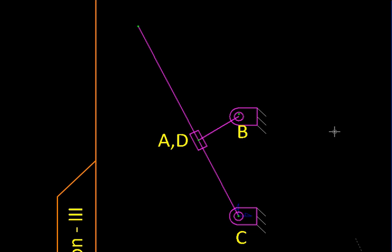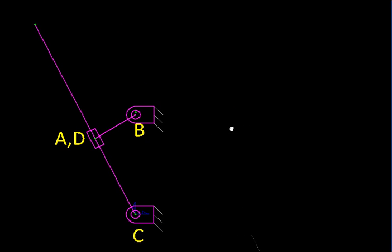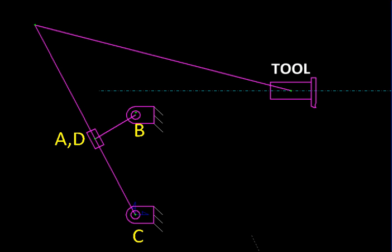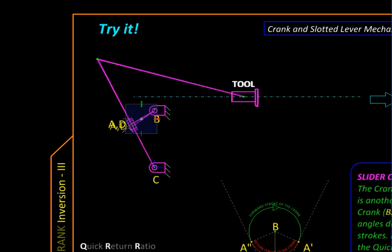Next, we are going to make this mechanism a little more useful by adding a few links like this. So here we have added a link. At the end of it we have fixed a tool which is constrained to reciprocate along this horizontal path. Now as the mechanism moves, the tool goes back and forth, so it reciprocates.